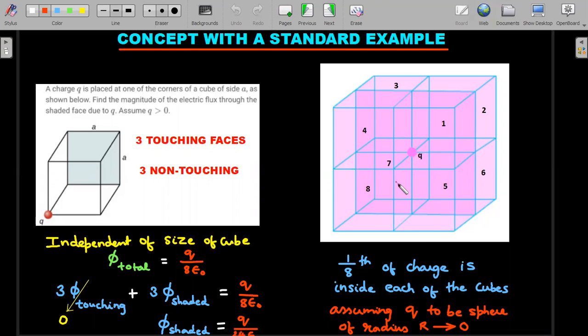Think of the charge as a sphere whose radius is shrinking to zero. As this limit tends to zero, the fraction of charge inside any smaller cube remains one-eighth, independent of the cube's size. The flux for the entire six surfaces is one-eighth of q/ε₀. Three touching faces have zero flux because field lines graze those surfaces. The other three surfaces, due to symmetry, share the flux equally.